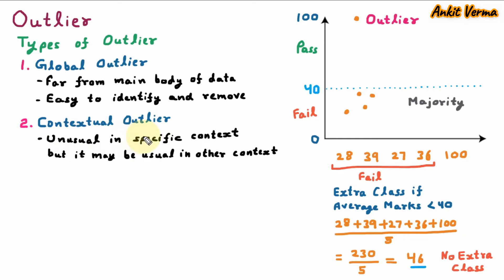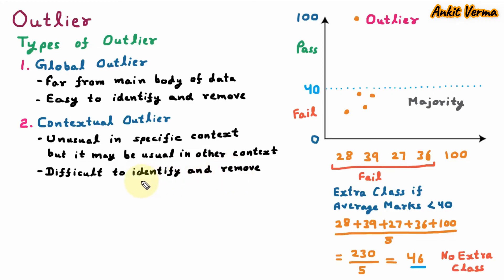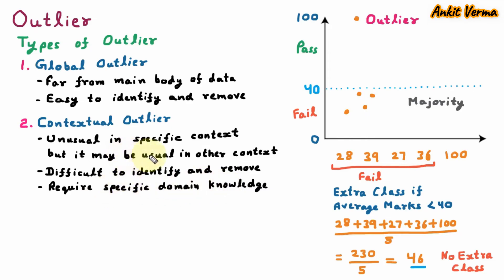Contextual outlier is difficult to identify and remove because the outlier is based on context. It requires specific domain knowledge — to identify the contextual outlier, we need specific domain knowledge. For example, the sale of a laptop is increasing because of a holiday or Sunday, so we must have the knowledge of sales. So these are the types of outlier.